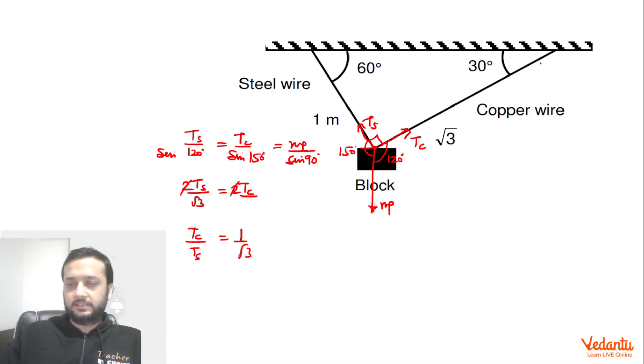Now if you apply the Young's modulus formula, stress by strain equals Young's modulus. So for the copper wire, we can say that Tc upon area of cross section equals Young's modulus of copper into delta Lc divided by length of the copper wire which is root 3. And Ts upon area of cross section which is same equals Young's modulus of steel into delta Ls divided by length which is 1.